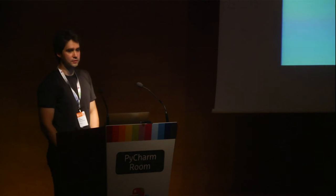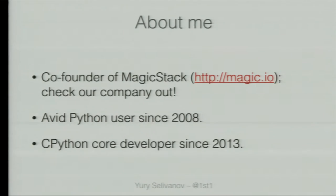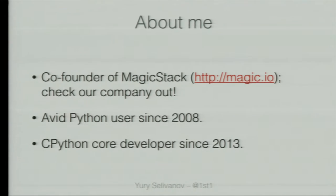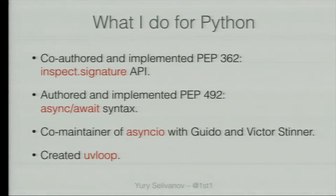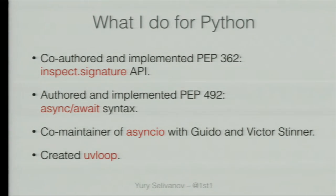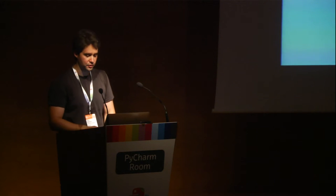Toronto, Canada. My name is Yuri Selvanov. I'm co-founder of MagicStack. Check out our website, it's magic.io. I'm an avid Python user since 2008. I started with Python 2, but then switched to Python 3 - I used it since Alpha 2 or something and never looked back. So use Python 3. I'm a CPython core developer since 2013. You might know me from PEP 362, which I co-authored with Larry Hastings and Brett Cannon - that's the Inspect Signature API. Then I created PEP 492, that's async/await in Python 3.5. I'm also helping Guido and Victor Stinner to maintain asyncIO. I also created uvloop - more on that later.